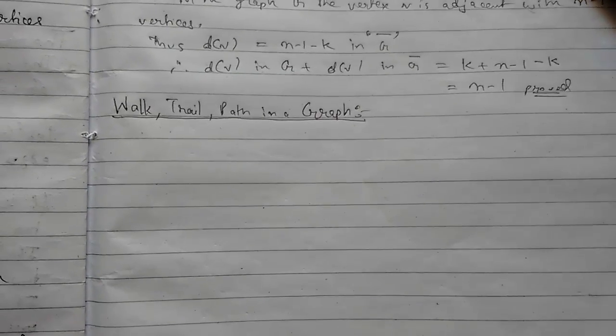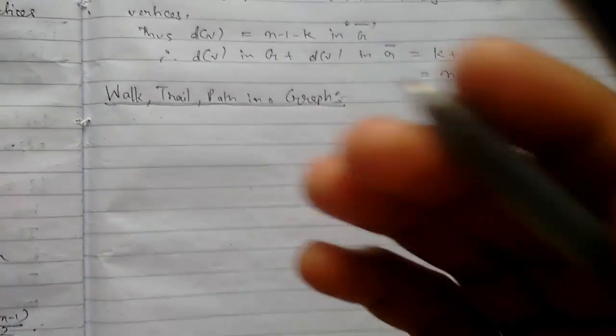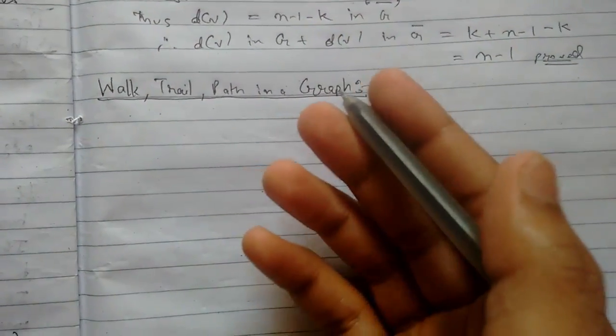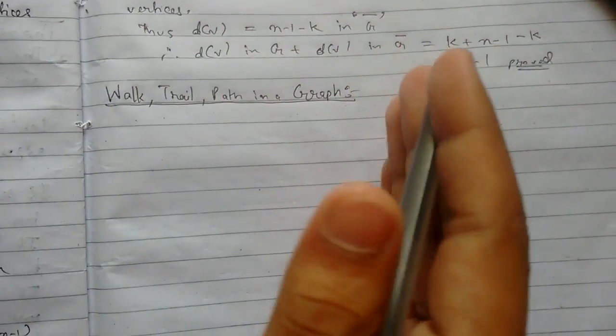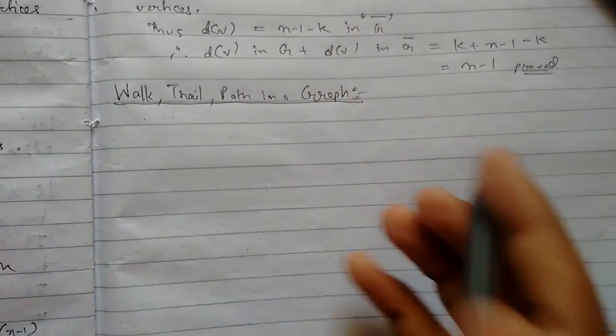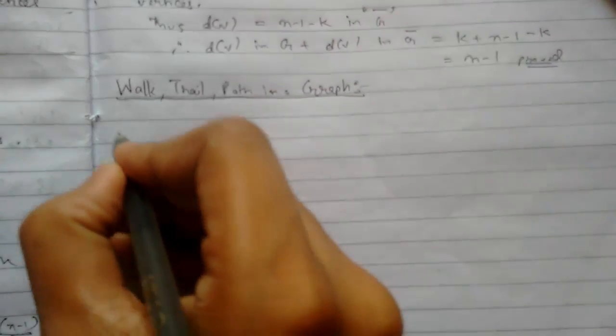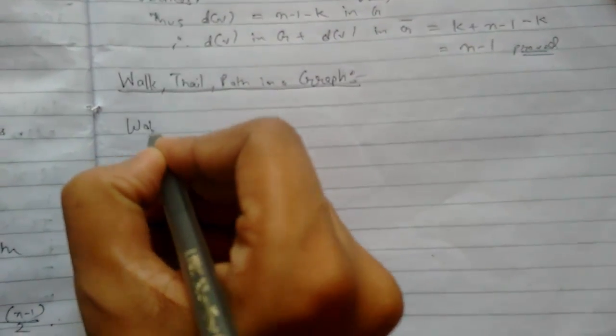Today we will be continuing graph theory. We will be learning about walk, trail, and paths in a graph. From this video, we are starting the second chapter of graph theory. Previously, all that was the first chapter. So let us start.